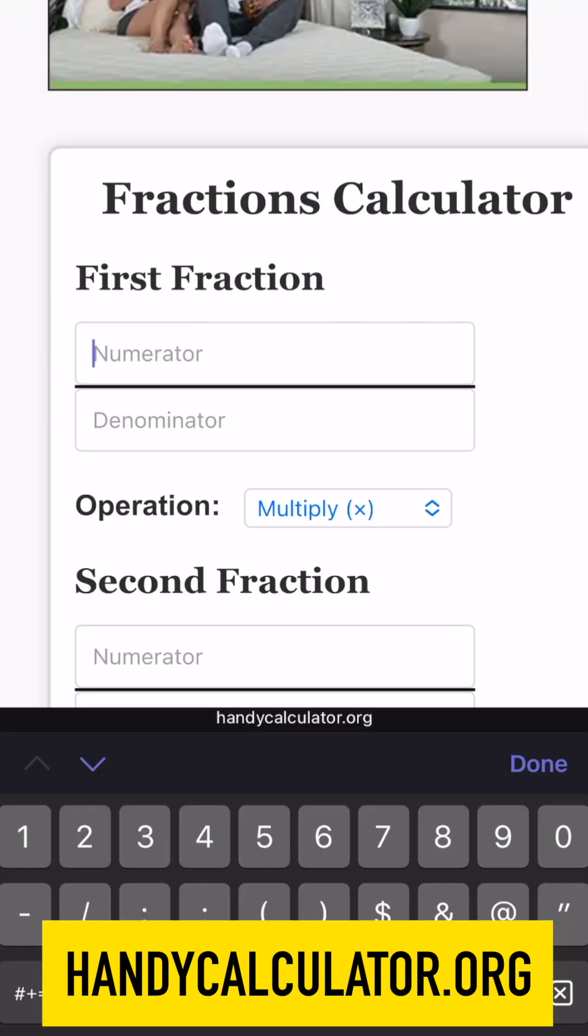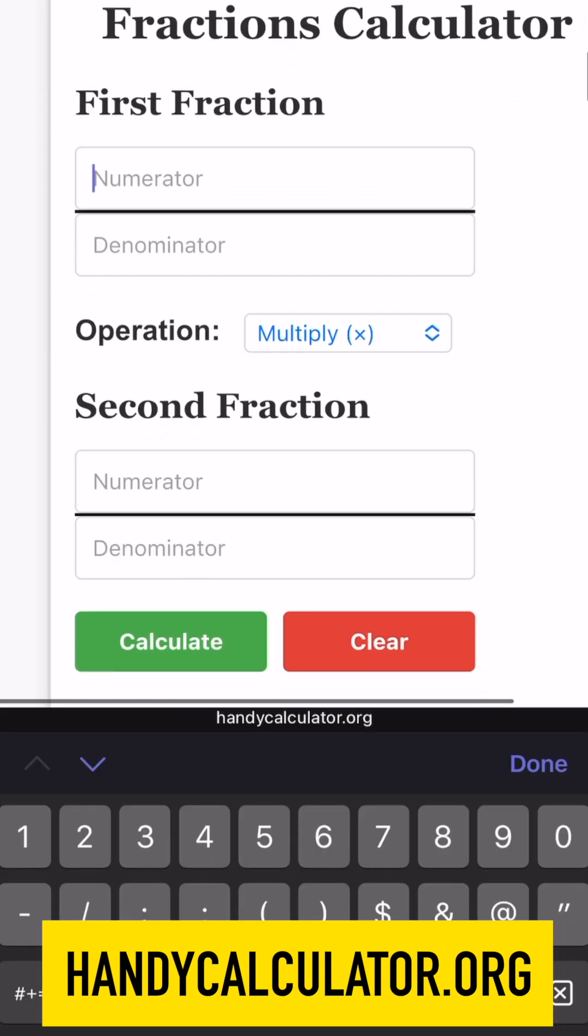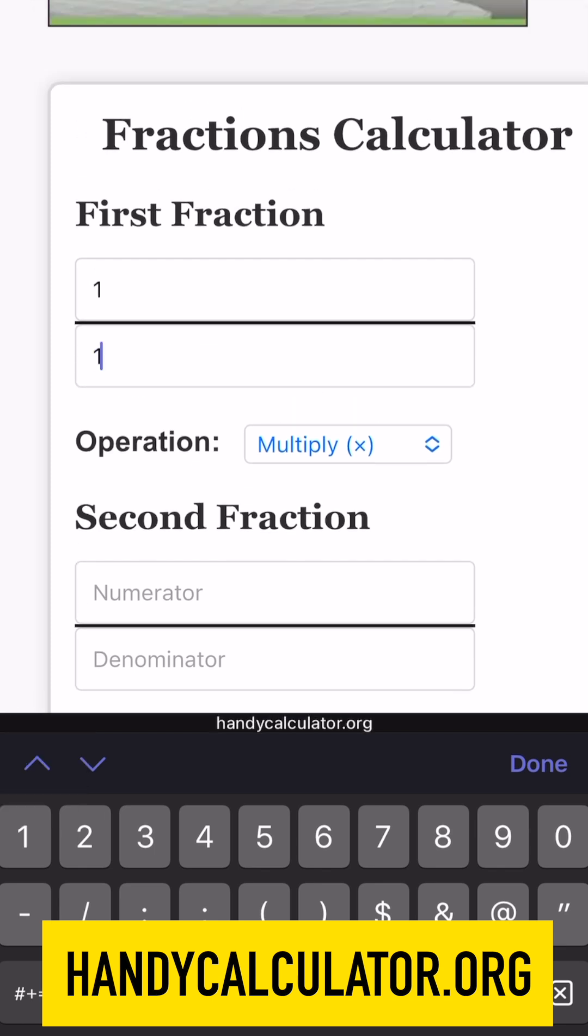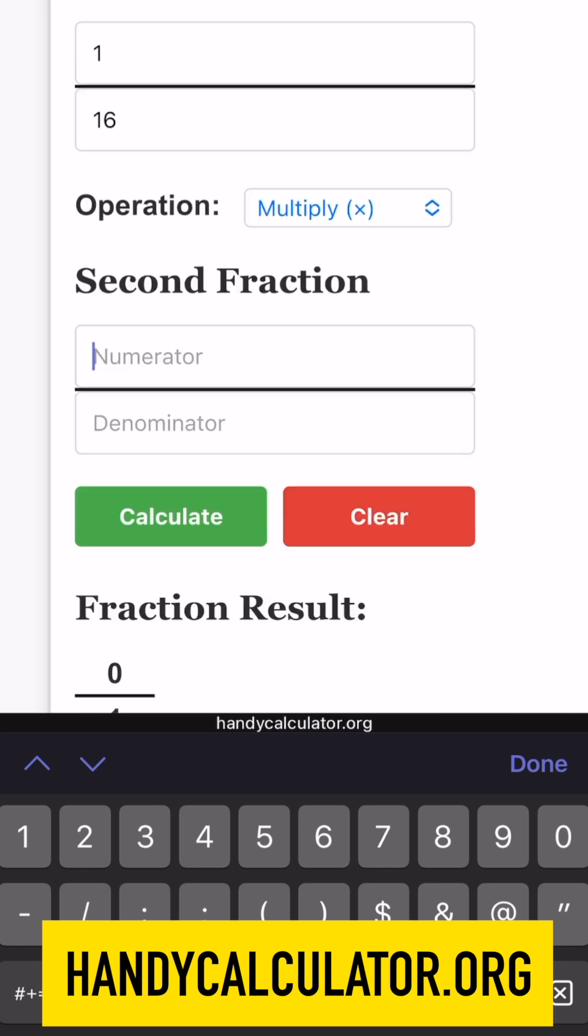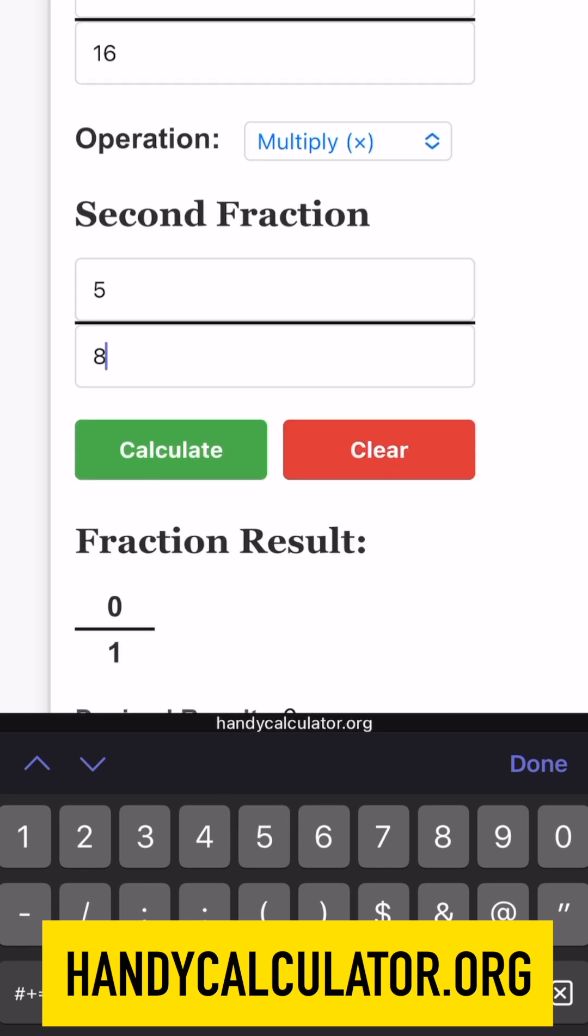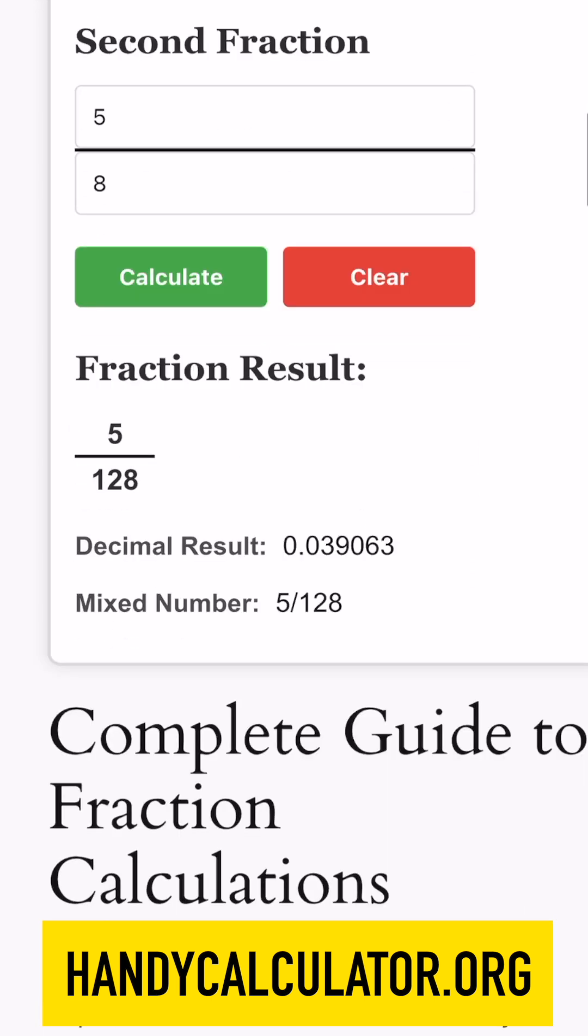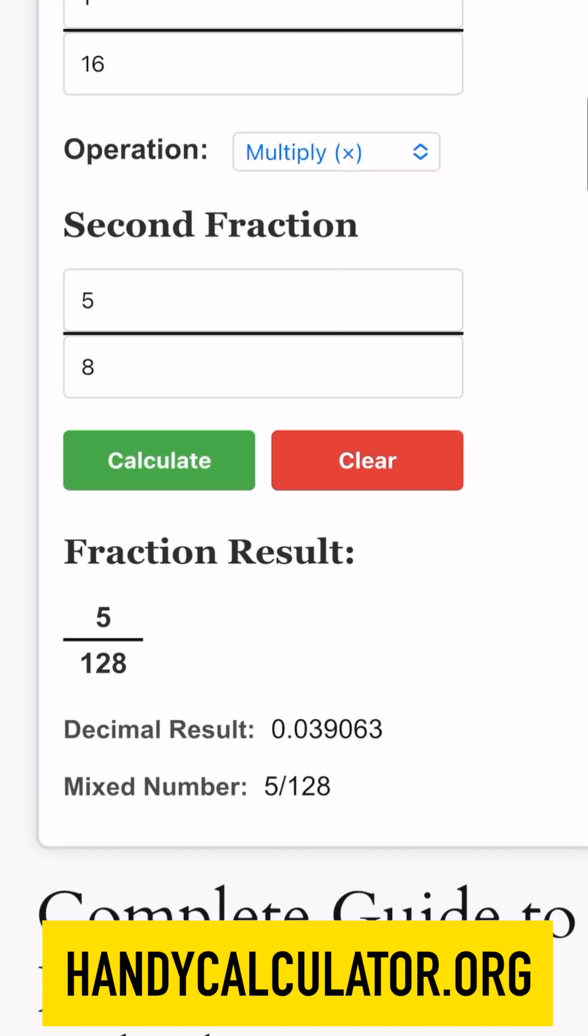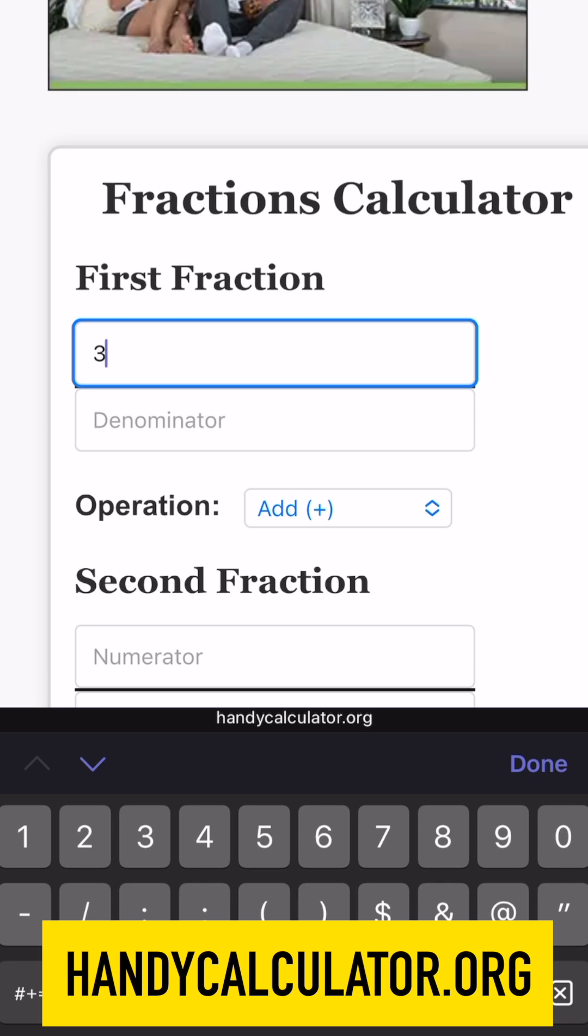We're going to do a test calculation here. We're going to multiply 1/16 by 5/8 and calculate that. It gives us a result of 5/128. So let's go for 3/4.